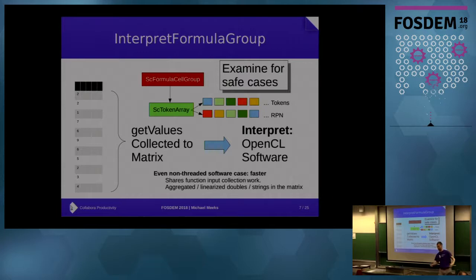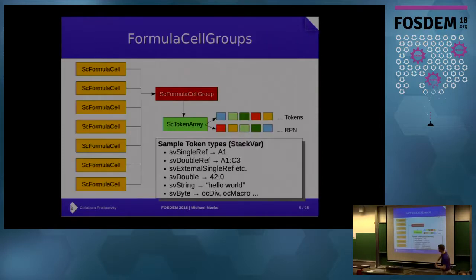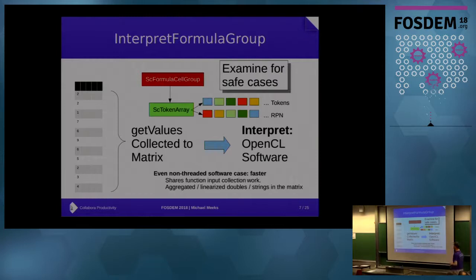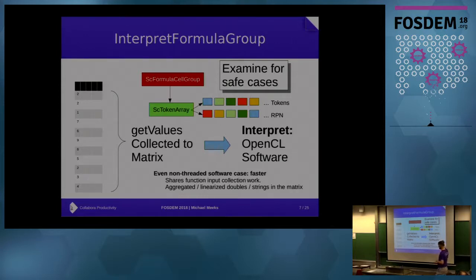All these tokens are arranged into a formula cell group and we know how big this group is - it spans a whole column. Perhaps we could do better. There's a thing called interpret_formula_group that in various cases is called - and should be called more frequently, though there are future plans for that. This can do something different: the existing OpenCL and software cases can try to interpret a great chunk of the group all at once.